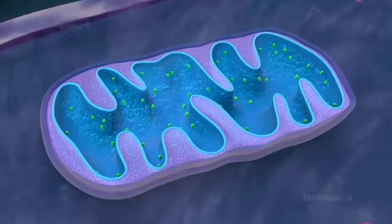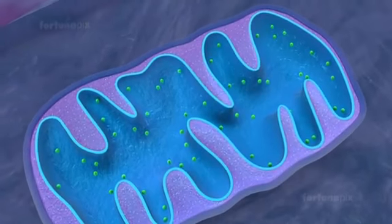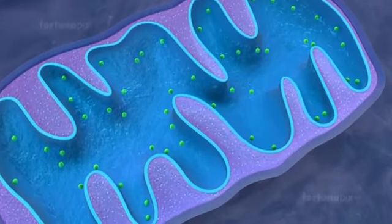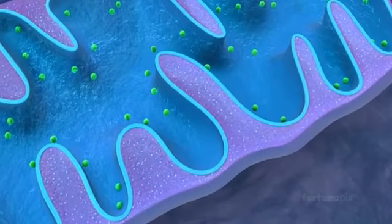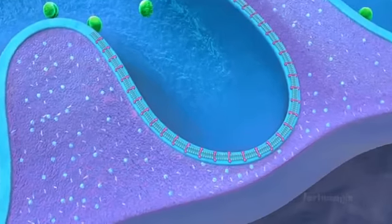The inner membrane has many inward folds called cristae. The folds increase the surface area and are the working surfaces for mitochondrial reactions. The inner membrane is selectively permeable to certain molecules.